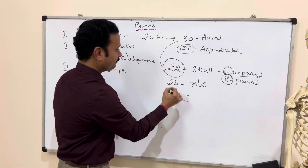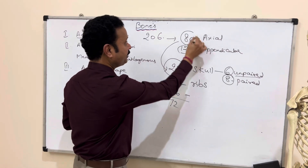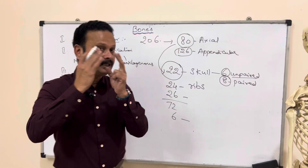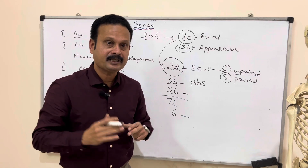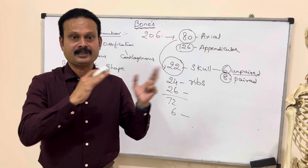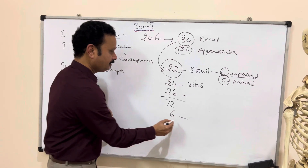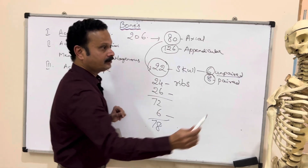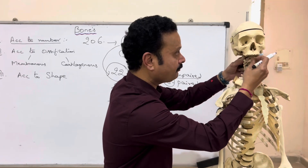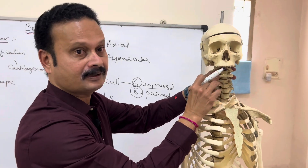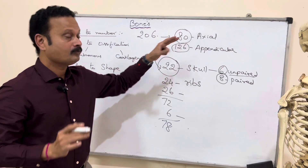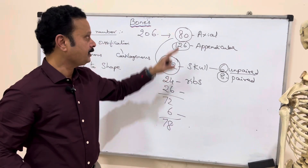So that brings us to 72. Still 8 are remaining: 6 ear ossicles — 3 on each side within the middle ear: malleus, incus, and stapes — making 6. That brings us to 78. Then one sternum makes 79, and the hyoid bone makes 80. So the total number of bones forming the axial skeleton is 80.